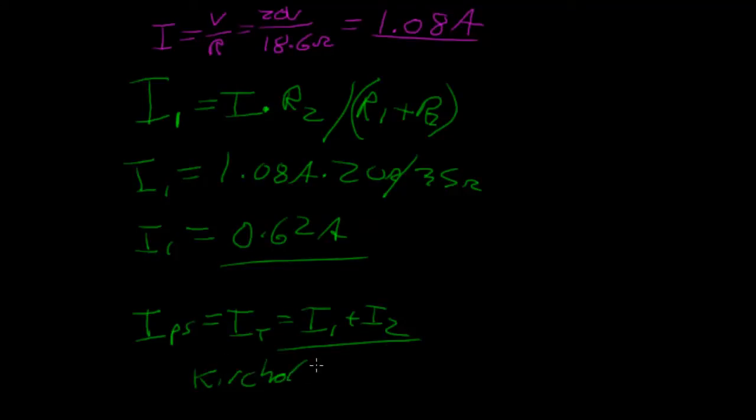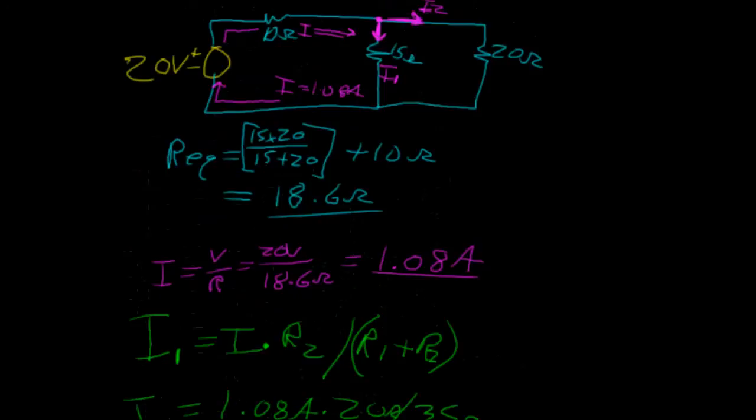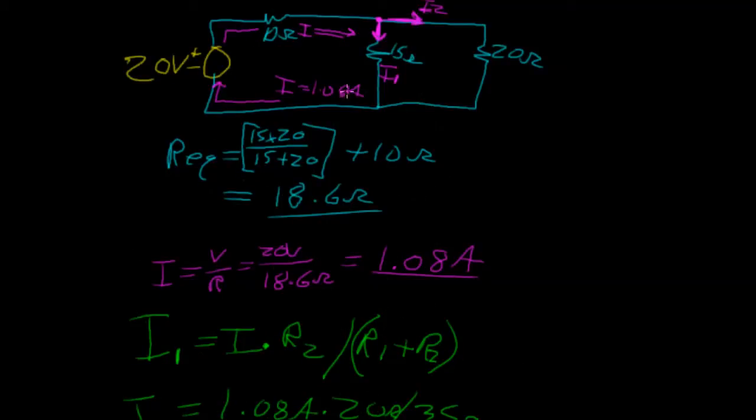Where the current flowing into a branch will equal the sum of the currents flowing through each individual branch. So I total or I power supply or I will equal I1 plus I2.